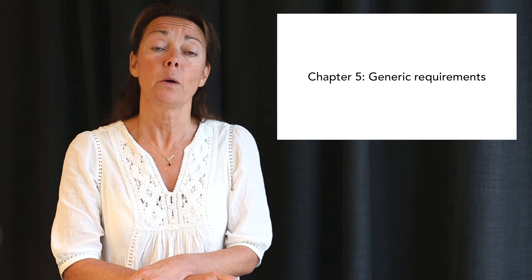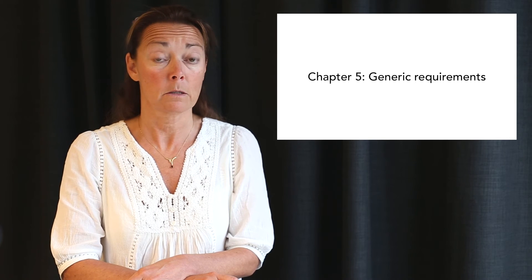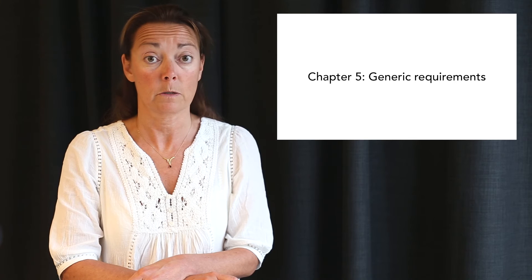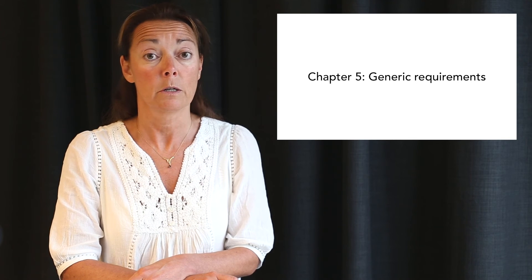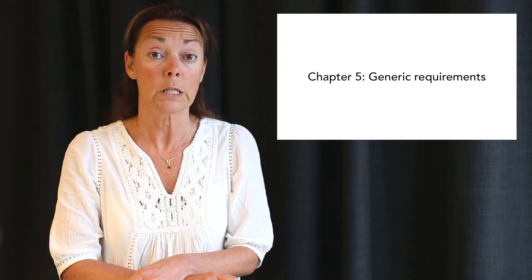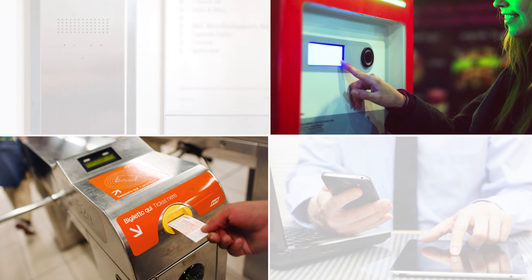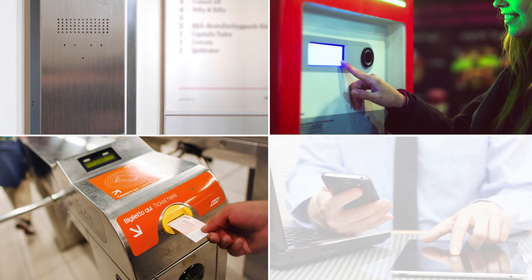Let's take a quick look at the generic requirements in chapter 5. Generic requirements cover, among other things, so-called closed functionality. Closed functionality means that the user can't attach specific personal assistive technology, such as a screen reader with headphones, for a person that cannot read text. This could be, for example, information kiosks and ticket machines. For devices with closed functionality to work for all users, the system must provide ways to interact and perceive information that cater for different user needs. That means the system in itself must work as assistive technology — providing sound in some way, but of course not only sound.